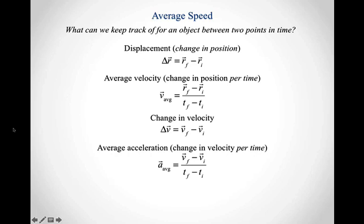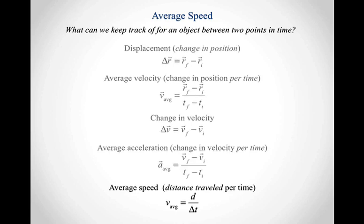All right, so when we initially set up what can we keep track of for an object between two points in time, we said that there were four vector things that we could keep track of: the change in position, the average velocity, the change in velocity, the average acceleration. But there was also one additional thing that we could keep track of, and that was the average speed.